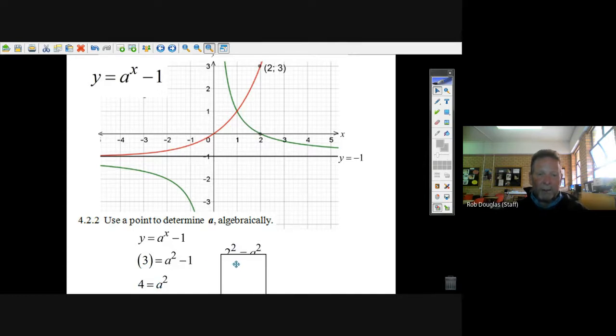Well, instead of thinking about it as four, why not make it look like two squared? Two times two. Now I can see if I make the exponents exactly the same, these bases must be the same for it to be equal. So a must equal two.